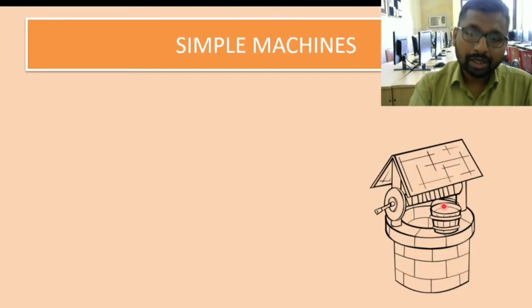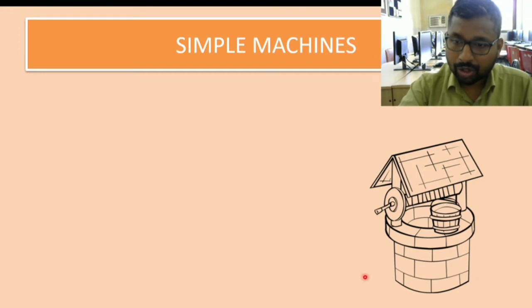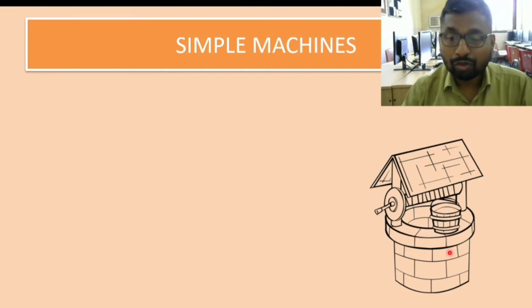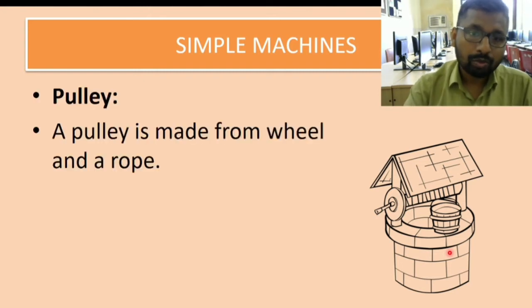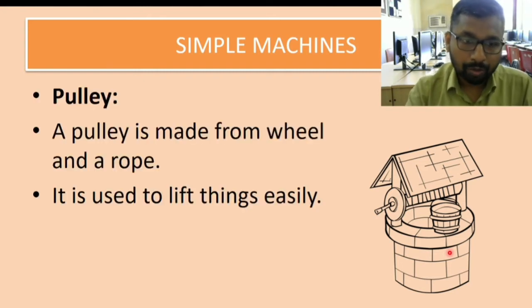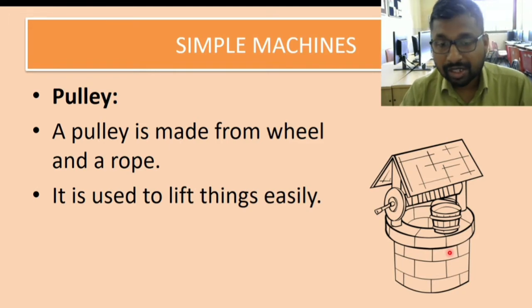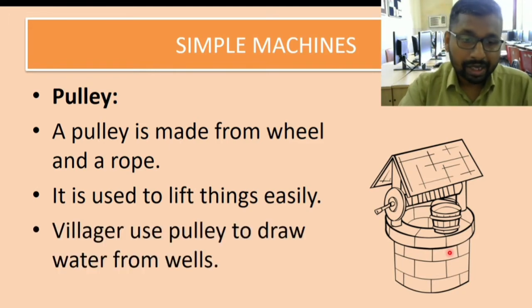Then comes another simple machine. Can you recognize this image? This is an image of a well. In villages, even now, they use these wells to fetch water. A pulley is made from a wheel and rope. It is used to lift things easily. A good example is a well - villagers use pulleys to draw water from wells.